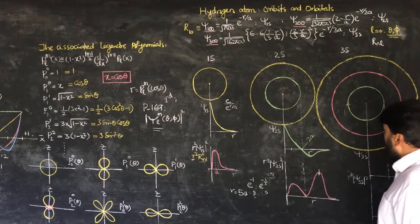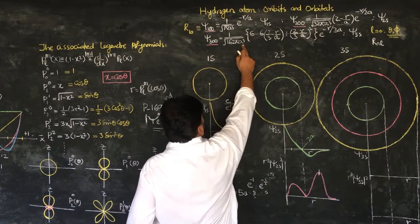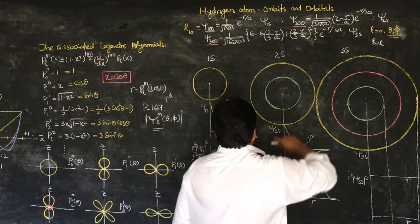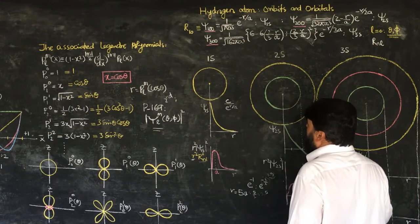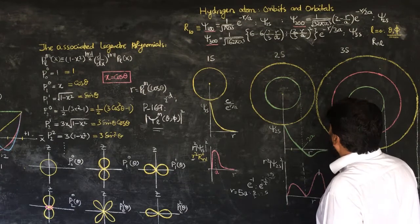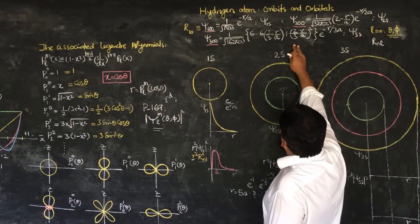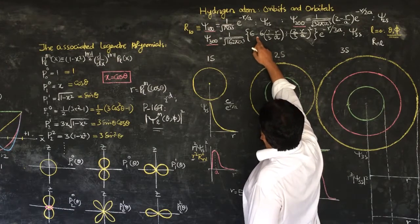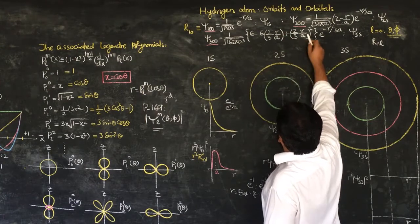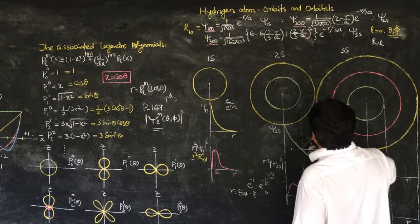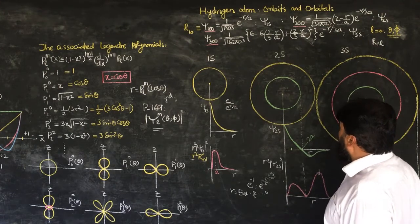Similarly, if I come to this one, this is a constant term and we will start with ψ₃ₛ, which is R₃₀. R₃₀ is such that we are now having different terms — we are having r/a here and r/a here and then r/3a here.